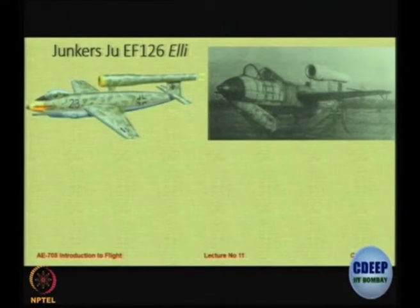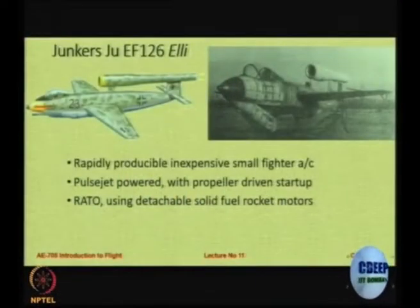During the war, Germany was interested in creating a large number of disposable aircraft — disposable bombers. They wanted to make small inexpensive fighter aircraft which could be rapidly produced. So they came up with the idea of a pulse jet powered military aircraft. It had a small propeller in the front to give the starting thrust when it starts moving. Once it reaches some minimum speed at which air can come in, it would fire the pulse jet and fly with it. It also had a rocket assisted takeoff using detachable solid fuel rocket motors on the side to allow a huge thrust during takeoff.